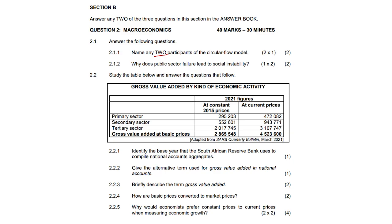2.1.2: Why does public sector failure lead to social instability? The lives of people are quite heavily destabilized and their human rights are also compromised. The community becomes rather disgruntled and they start making their demands through protesting.